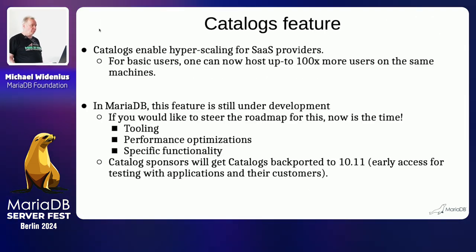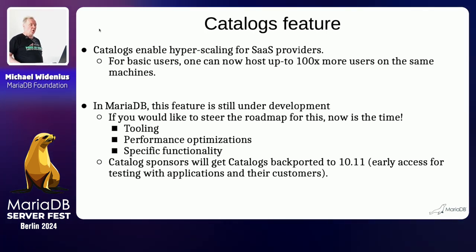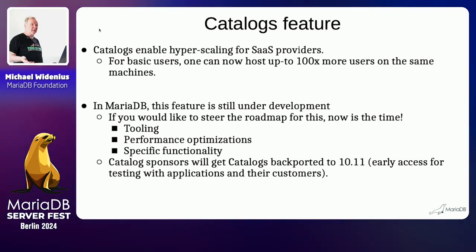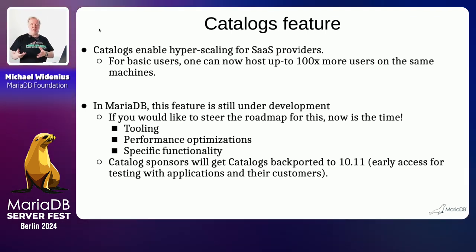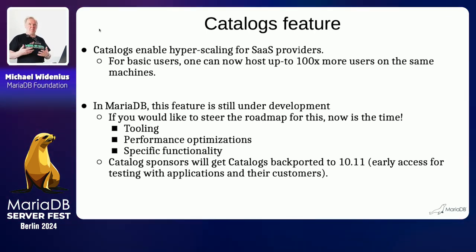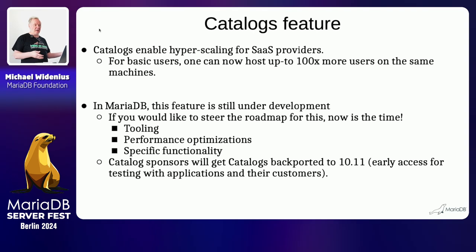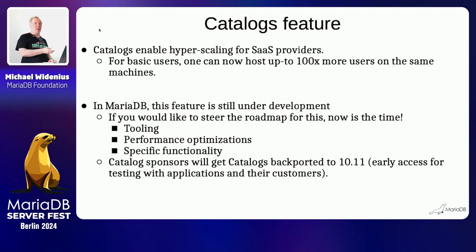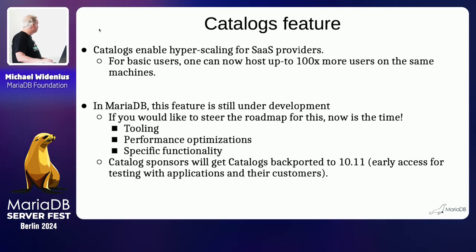In the most optimistic cases you can probably put 100 times more users on the same machine. This is not for high-usage users who do a lot of things, but SaaS providers have a lot of users who barely connect and when they do, they do things for a limited time and then disconnect. The server isn't doing that much, but having a big buffer pool and many connections, catalog will still be much faster than using any of the other systems.